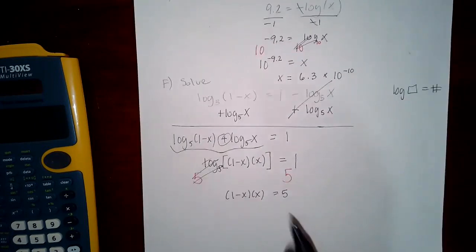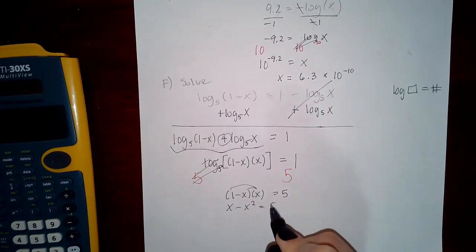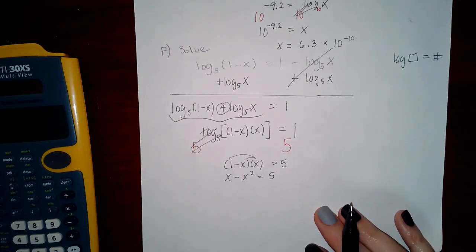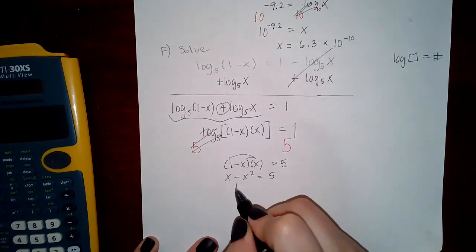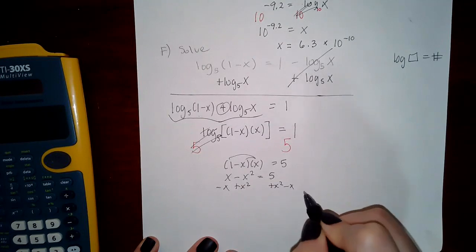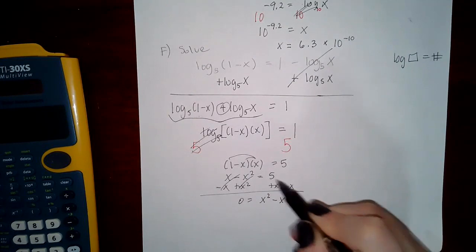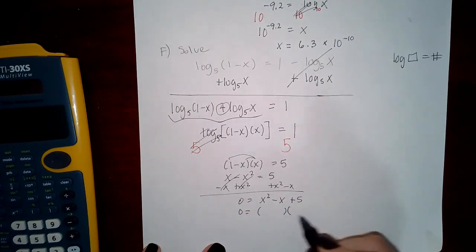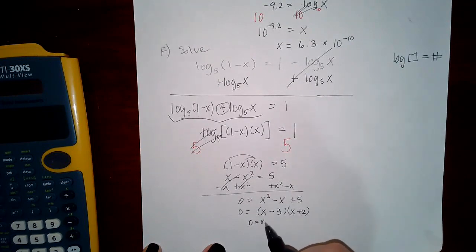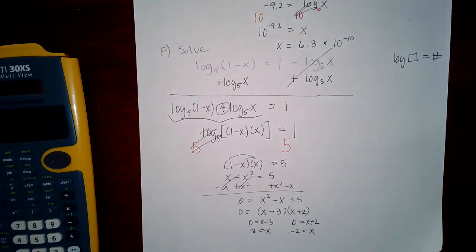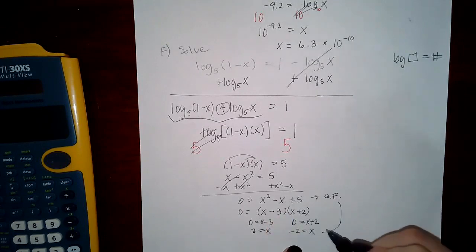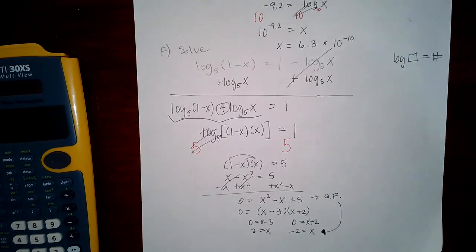5^1 = 5. Distributing x gives x − x² = 5, and moving all terms to one side gives x² − x + 5 = 0... which factors as (x − 3)(x + 2) = 0. So x = 3 or x = −2. If you prefer not to factor, the quadratic formula gives the same two values.